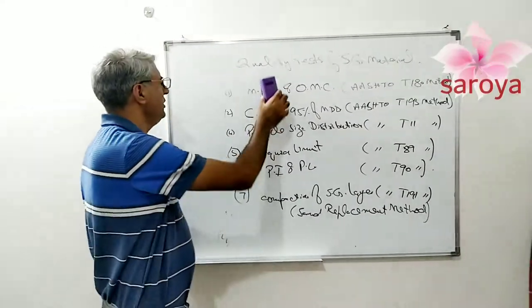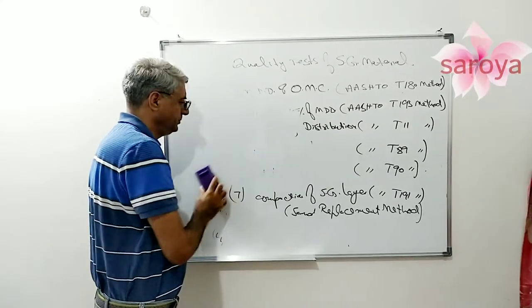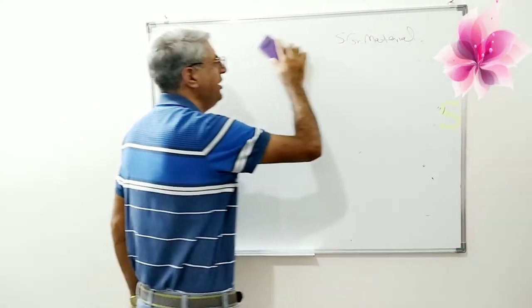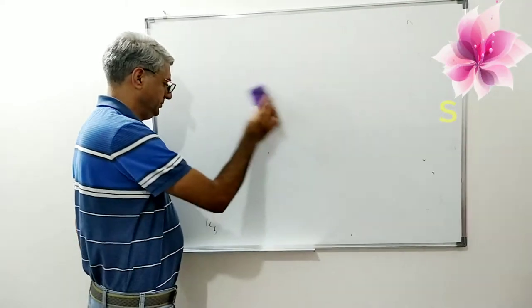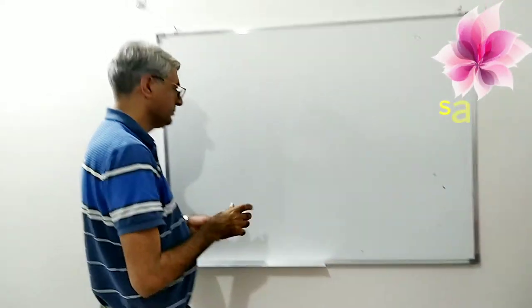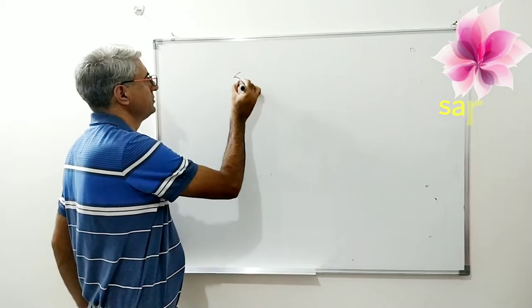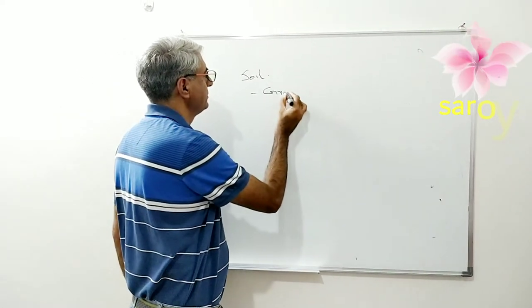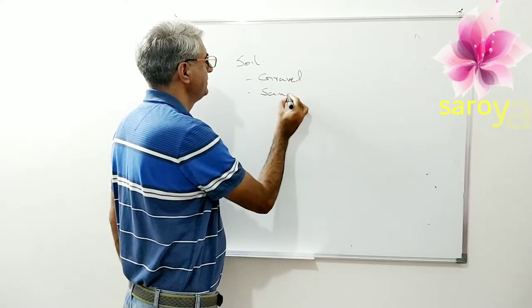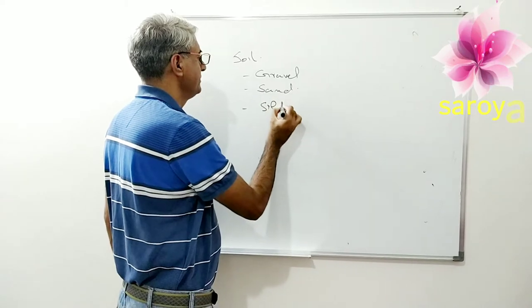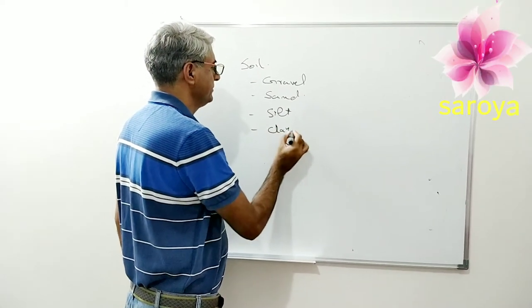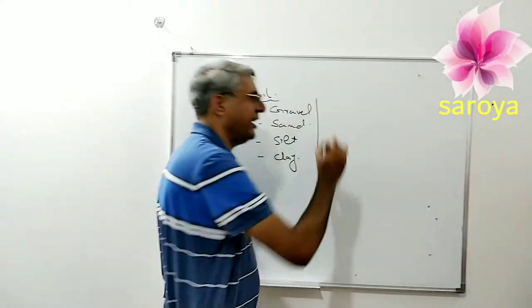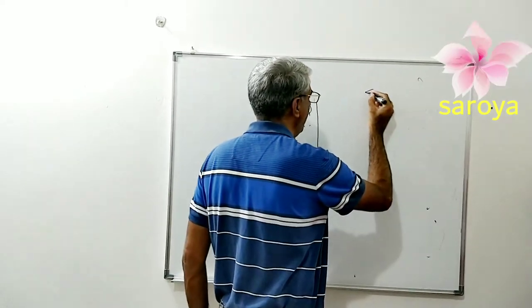And you see this subgrade is a soil. This subgrade is a soil, so from this soil point of view, this soil actually divided into four types: gravel, sand, silt, and clay. These are the just fundamental properties of the soil, but you know our area of concentration is not soil, our area of concentration is the material known as the subgrade.